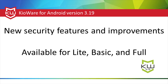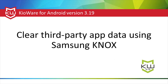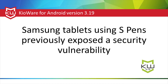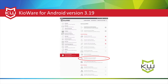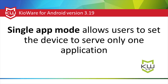New security features available for Lite, Basic, and Full include the ability to clear third-party app data using Samsung Knox. Samsung tablets using S-Pens were previously exposed to a security vulnerability. S-Pen functionality can be blocked by selecting Disable Air Command Mode in the Samsung Knox tab, removing this potential vulnerability.